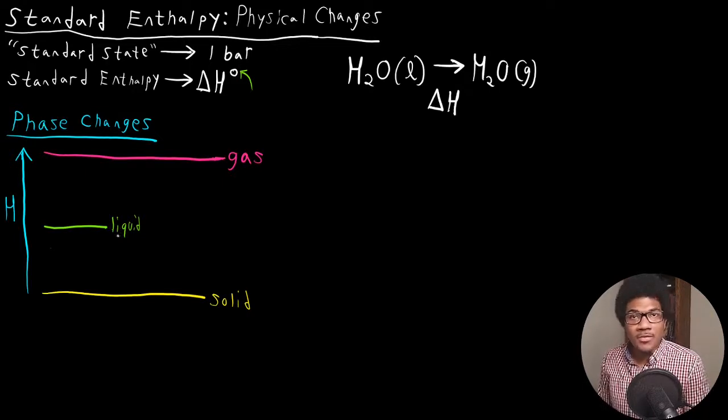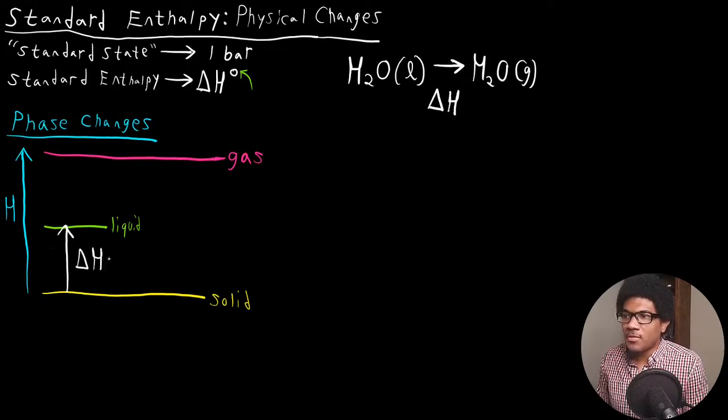Any transformation between these phases will have an associated phase change. Going from solid to liquid, this is melting or fusion, this will be your standard enthalpy of fusion. We denote that with delta H with the circle in the superscript and FUS, the subscript FUS for fusion.